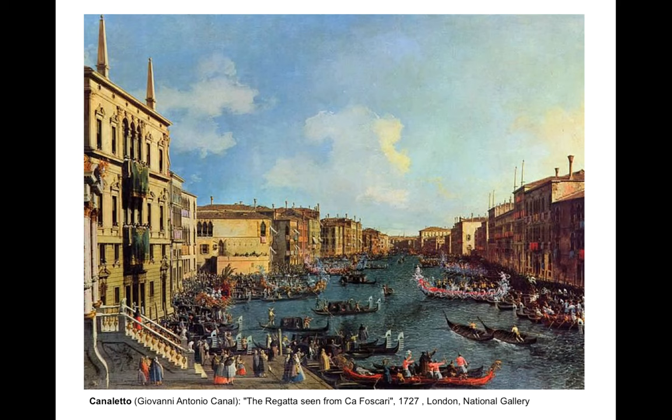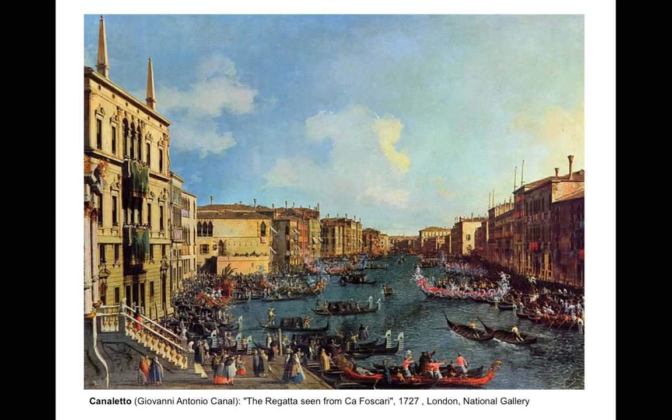In Canaletto's painting from 1727, you see Renaissance perspective — a way of simulating three-dimensional space on a two-dimensional plane.